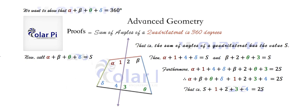And then subtracting S from both sides, we see that angle one plus angle two plus angle three plus angle four is equal to S, just like alpha plus beta plus theta plus delta is equal to S. Now, if we can show that one plus two plus three plus four is 360, then we've succeeded in showing that alpha plus beta plus theta plus delta is also 360, because they're both the value S.